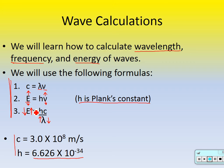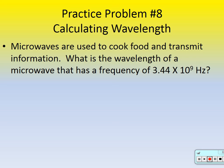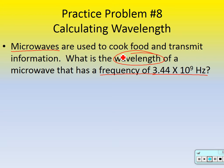Practice problem number 8 — microwaves. Microwaves are just a form of light that our eyes can't see. The waves are too small for our eyes to see, but it really is just like light. Microwaves are used to cook food and transmit information. What is the wavelength of a microwave that has a frequency of 3.44 times 10 to the 9th hertz? Underline what it gives us — it gave us frequency. Circle what it's asking for — what is the wavelength? Is there an equation we could use to find wavelength?